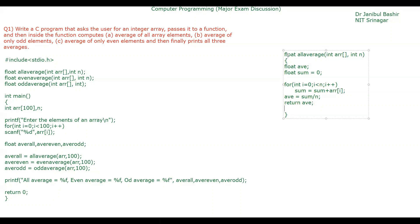What most students did wrong is declaring sum as int. When int is divided by int, the result is also int, causing truncation. For example, if sum is 100 and N is 11, the correct average is 9.09, but with integer division it truncates to 9. The correct approach is to declare sum as float, or use type casting: (float)sum / N.